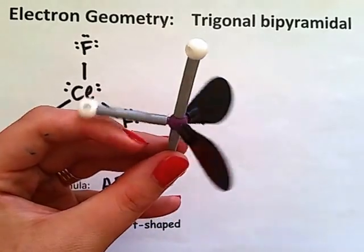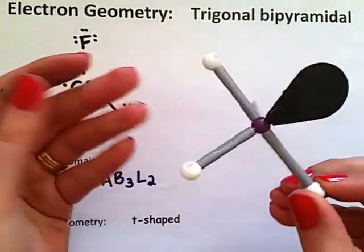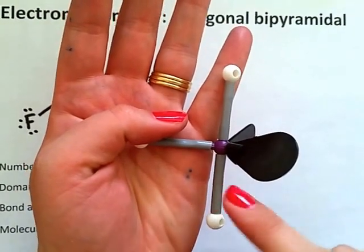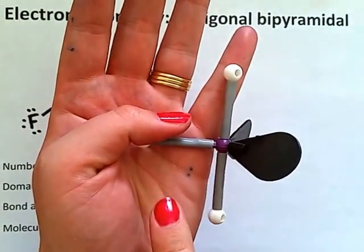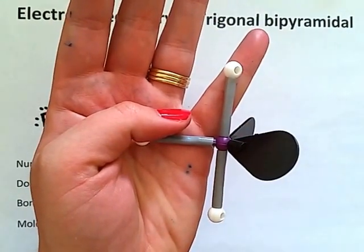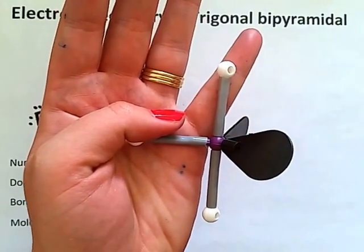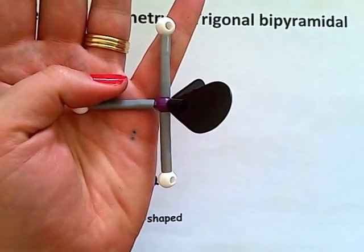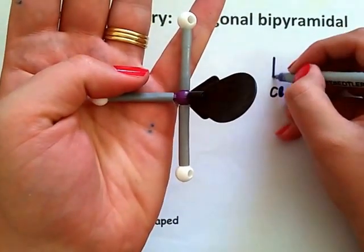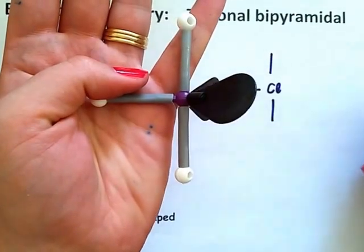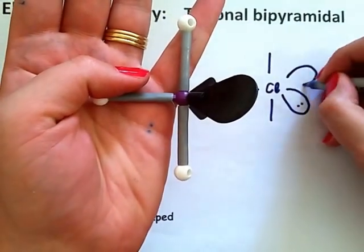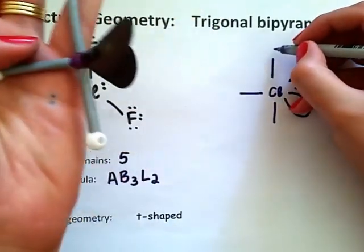Once you have finished building the molecule, hold it in such a way that the axial bonds are flat and one of the equatorial bonds is also flat. Remembering we do not need to show directionality for the lone pair coming towards us and the lone pair going away from us. Chlorine, three flat, no directionality required for the lone pairs.